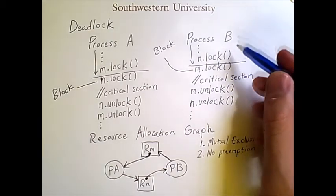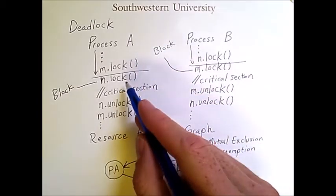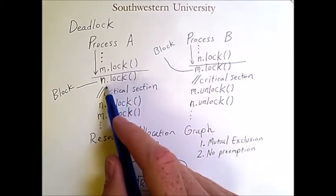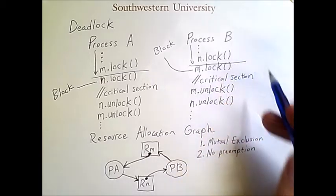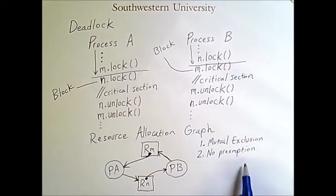Preemption would be if process A came along and said, hey, I'm taking N away from you. You don't get to have it anymore. In general, we don't allow preemption because allowing it in a way that doesn't break programs is complicated and difficult.